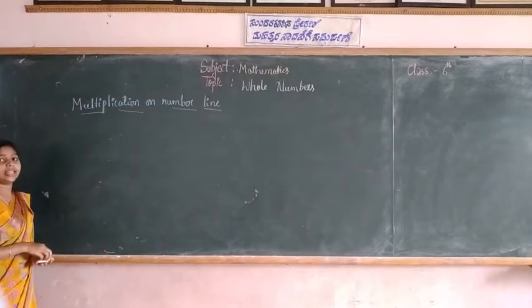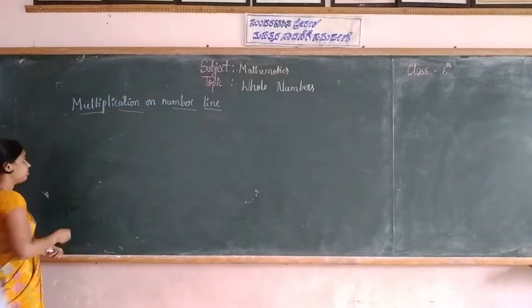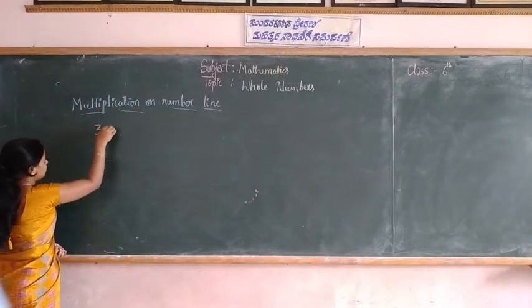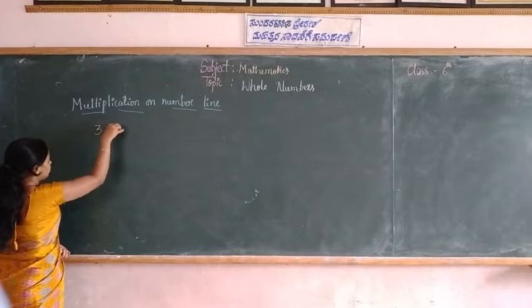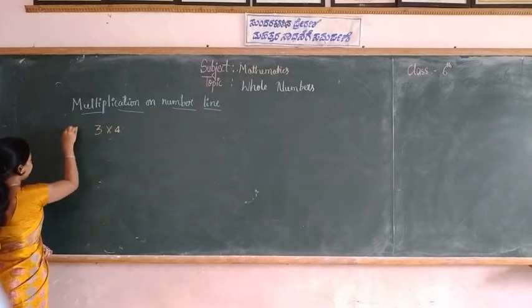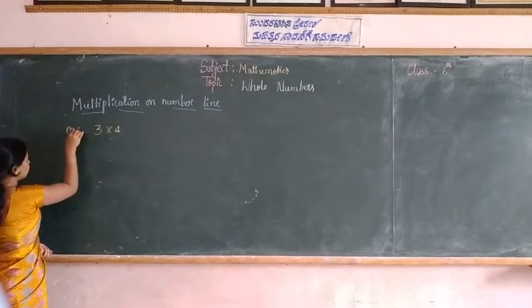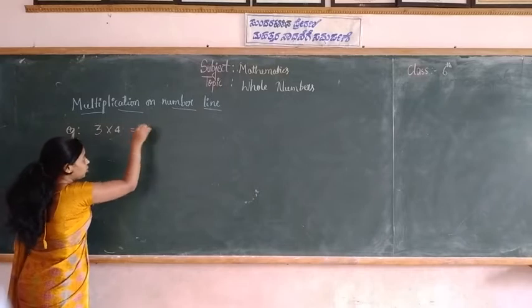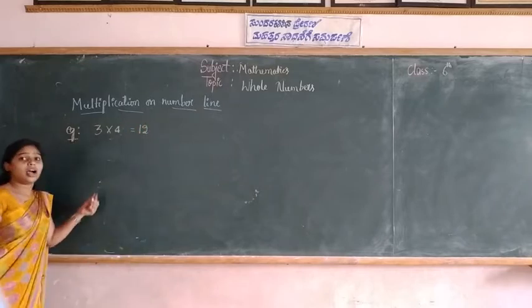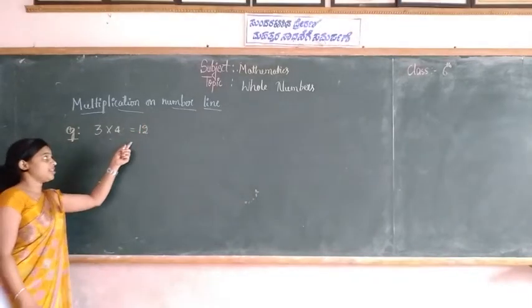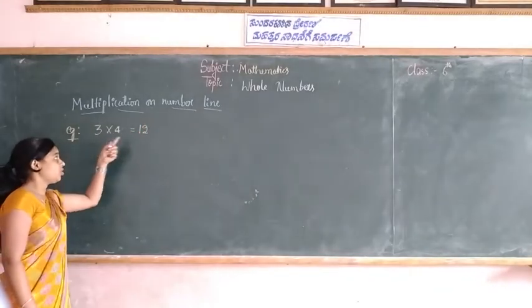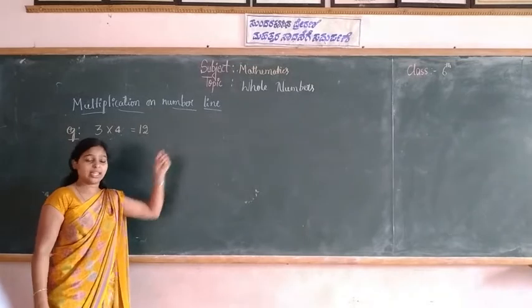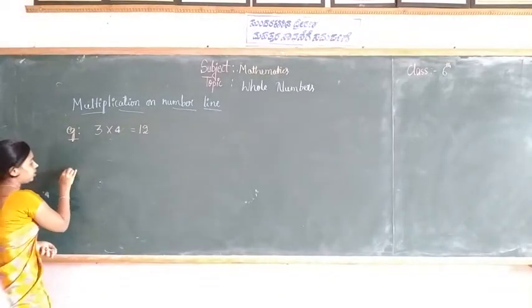Consider one example: 3 into 4, which is equal to 12. How will you represent 3 into 4 which is equal to 12? Let us check.